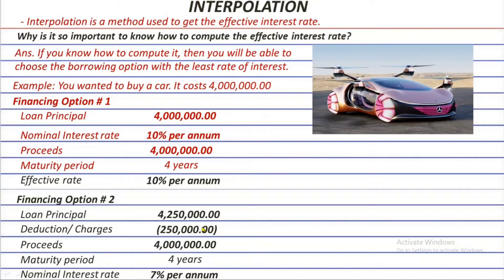We won't elaborate the specifics of the deductions for this problem because it's not really needed to get the effective rate. The maturity period is still 4 years, the same as the first option. But the nominal interest rate for this option is only 7% per annum, which makes it more attractive versus the first option. Because 7% of 4 million 250 thousand is only 297 thousand 500, while in the first option you need to pay 10% of 4 million, which is 400 thousand.